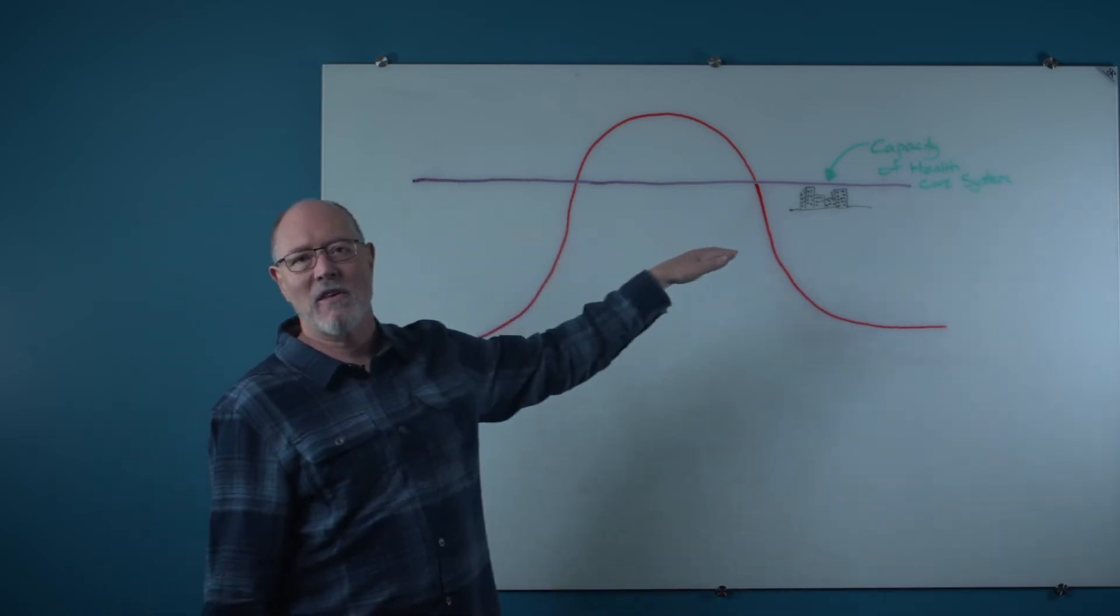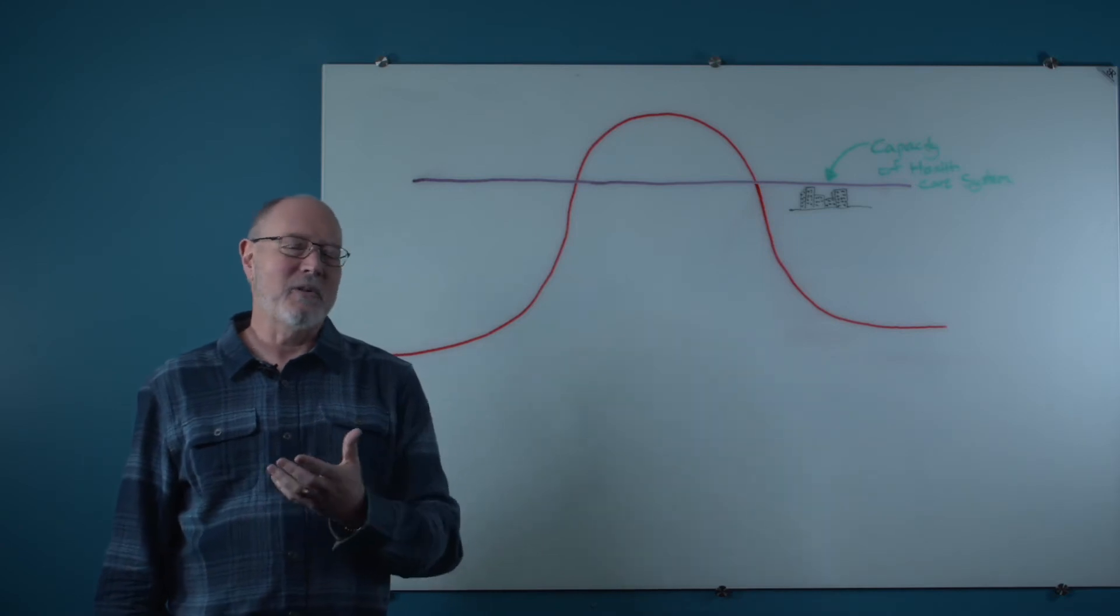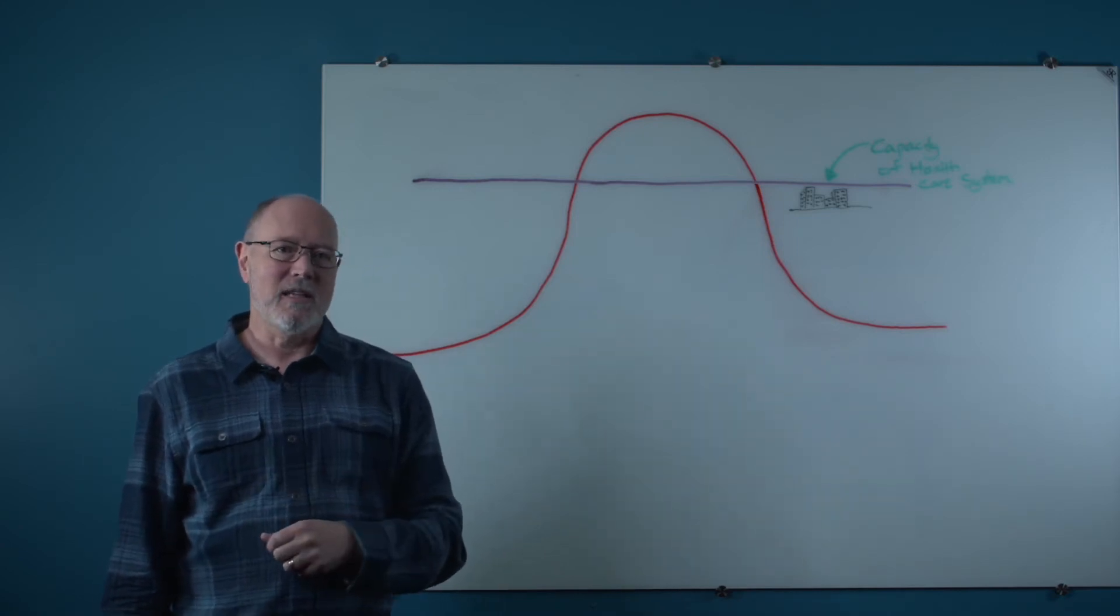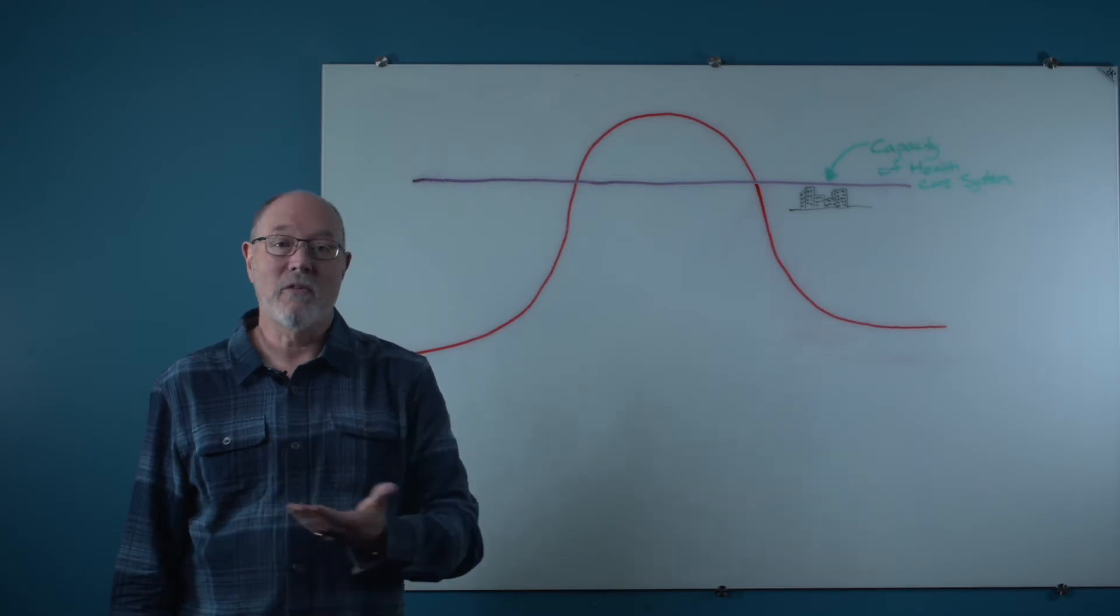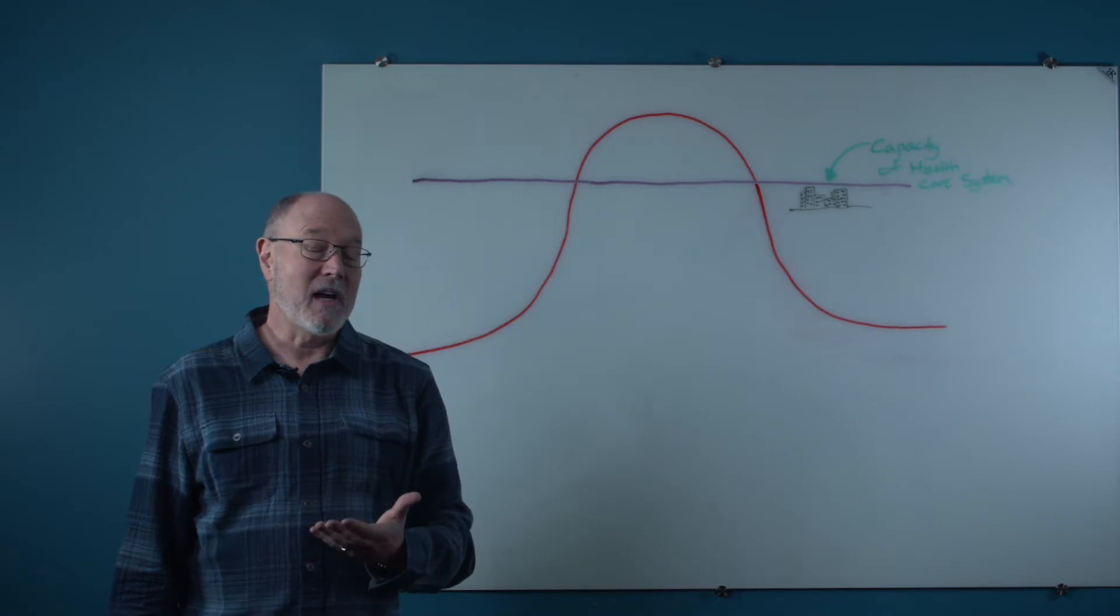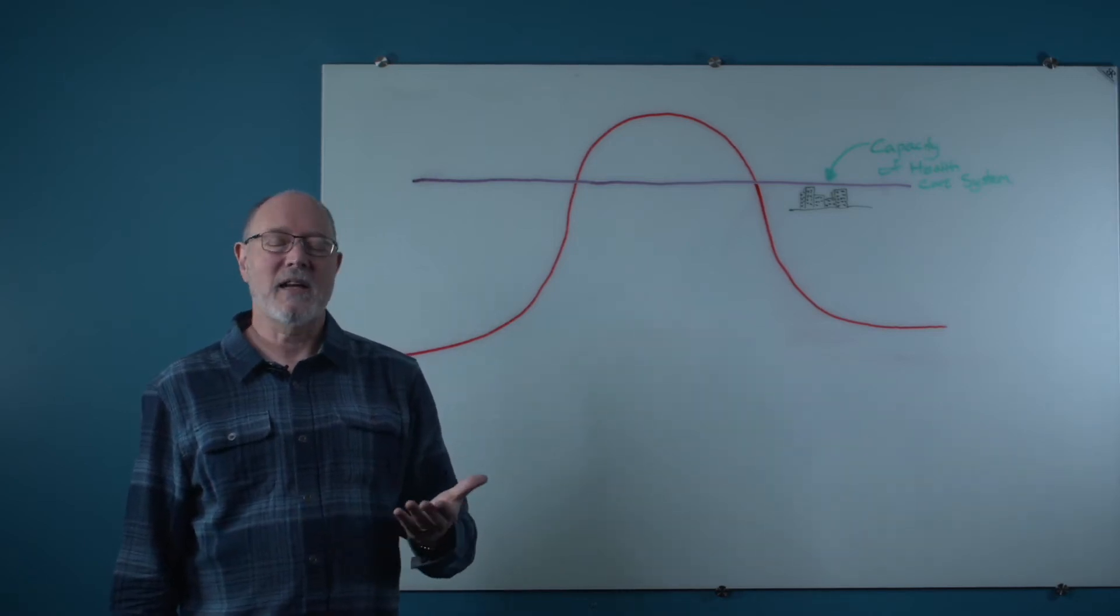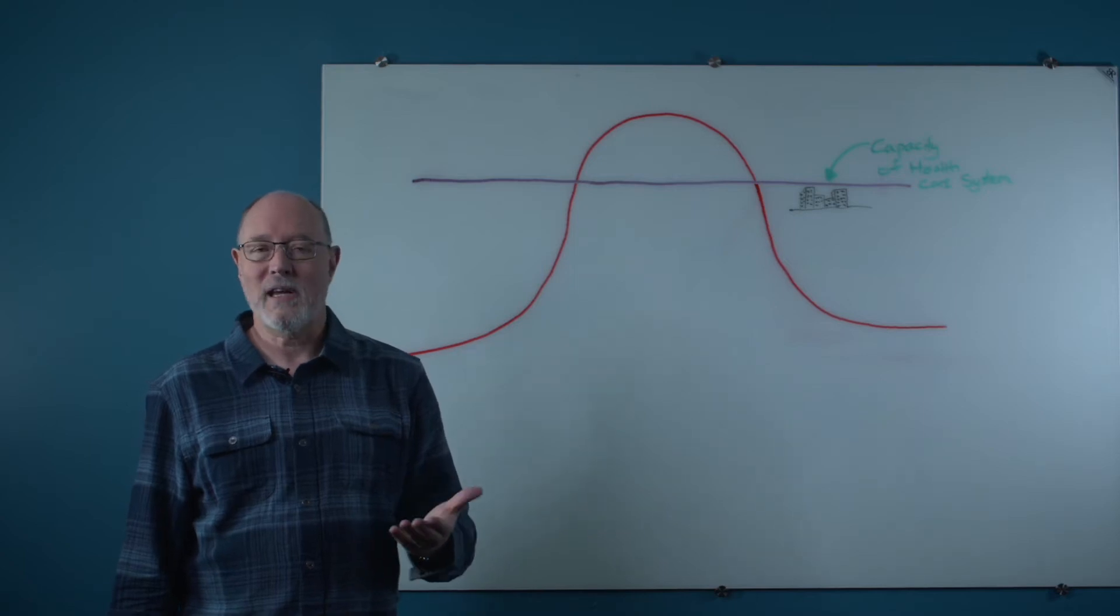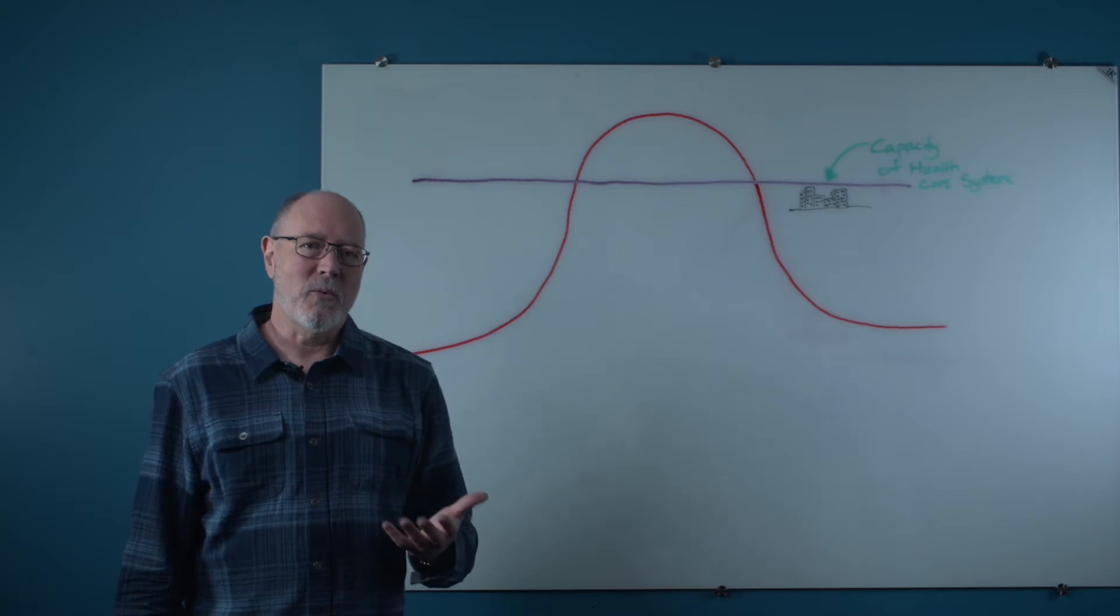This purple line is the capacity of the health care system. It's just a simple fact that the hospitals, we got great hospitals in our city, but the simple fact is they only hold a certain number of beds. There's only a certain number of people that can be there and if you think of even more dire situations there are only a certain number, a finite number of respirators that are available.